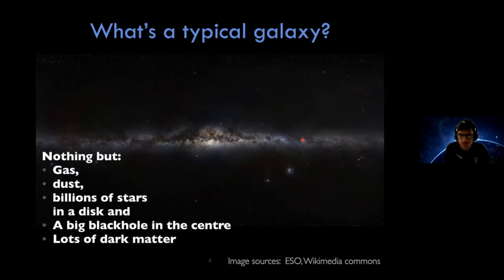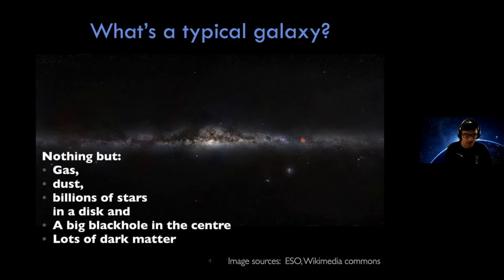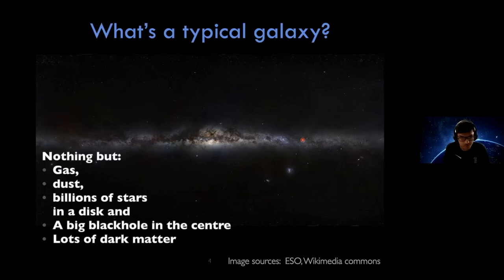Galaxies also contain something invisible — not dust — it's dark matter. To motivate dark matter briefly: if you look at how fast the stars go around the center of the galaxy and calculate the total mass including all the stars and the black hole, that mass cannot pull the Sun or any other star to keep it rotating at the speed it's going. There must be some invisible matter — dark matter — that keeps the stars from flying out of the galaxy.